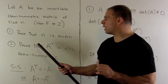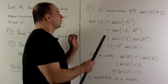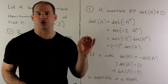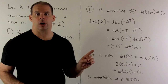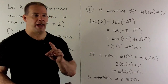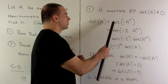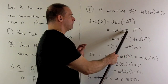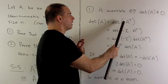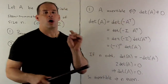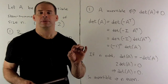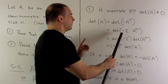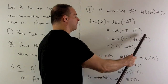To show number one: if A is invertible, that's equivalent to the statement that the determinant of A is non-zero. So if we take the determinant of A, that's equal to the determinant of minus A transpose. I could factor this as minus the identity matrix times A transpose, and then use the product rule for determinants to pull this apart.